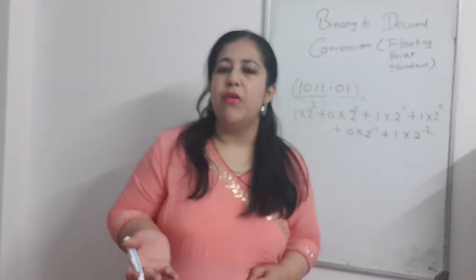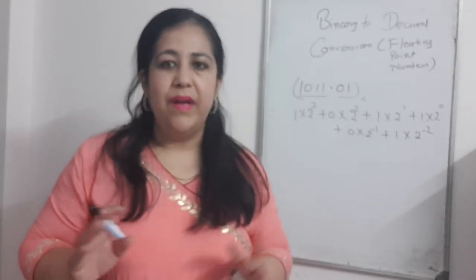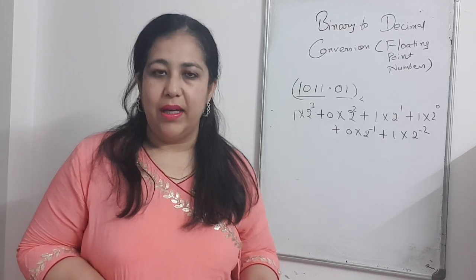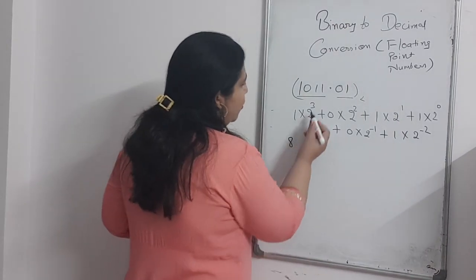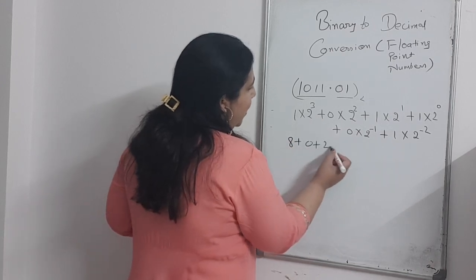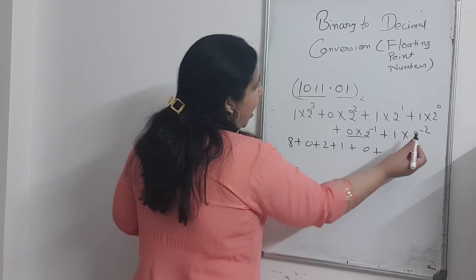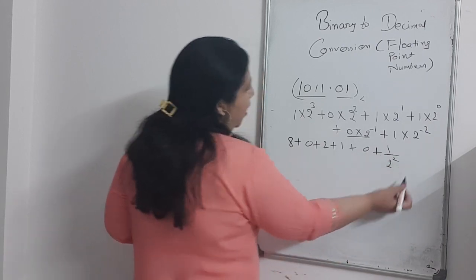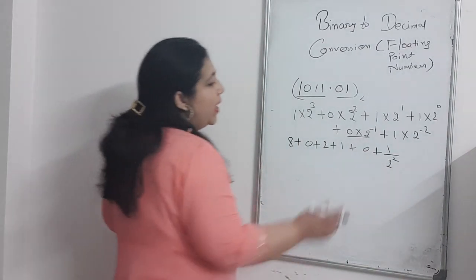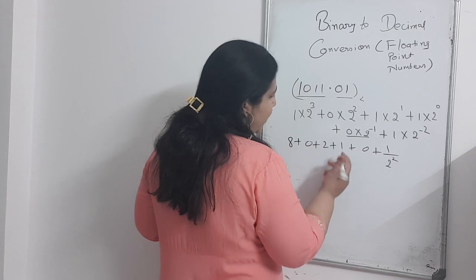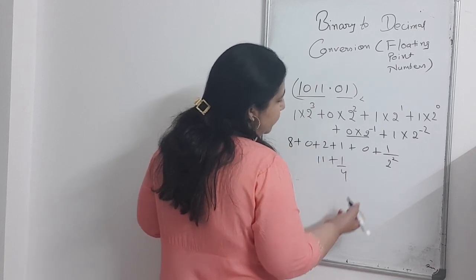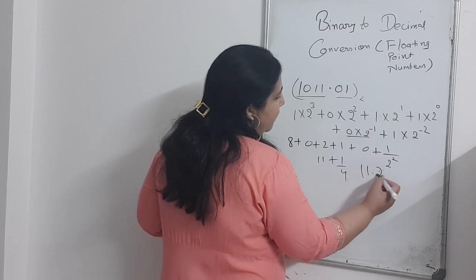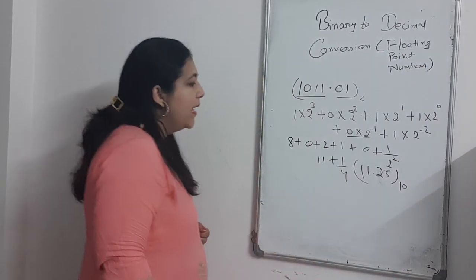This method applies not only to binary — if you have octal to decimal, the same approach applies, but the powers will be negative for the fractional digits. For the integer part: 2 raised to the power 3 is 8, plus 0, plus 2, plus 1. For the fractional part: 1 into 2 raised to the power minus 2, which is 1 upon 4, equals 0.25. So the total is 8 plus 2 plus 1 plus 0.25.